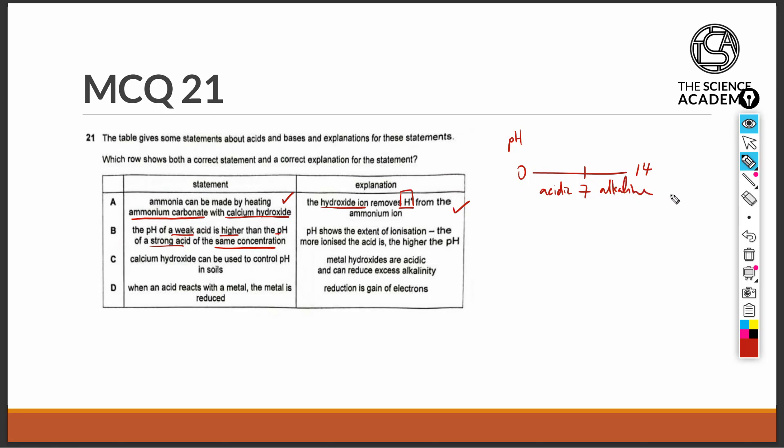A weak acid is going to be less acidic, or rather more alkaline than a strong acid. Therefore, the pH will definitely be higher. This statement is therefore true. pH shows the extent of ionization. This is also true. pH can be derived mathematically as the negative log10 of hydrogen ions. This means that the more hydrogen ions there are, the lower the pH because of the negative sign in front. So pH definitely shows the extent of ionization, but the more ionized the acid is, the higher the pH. This is wrong.